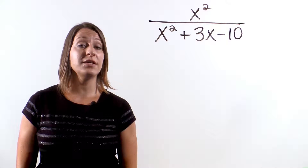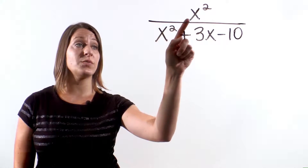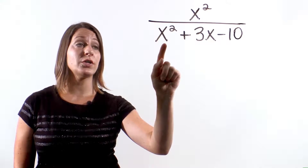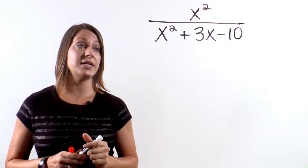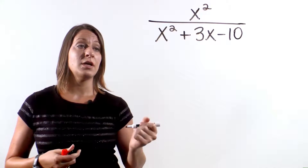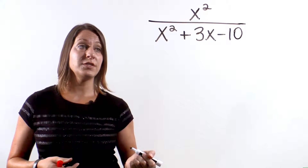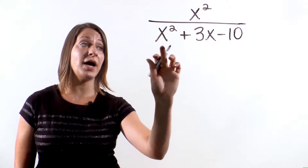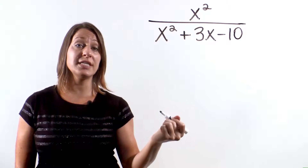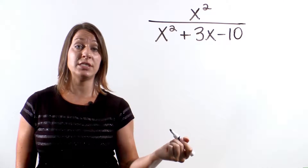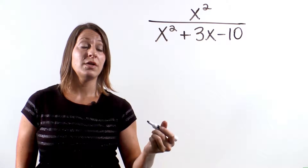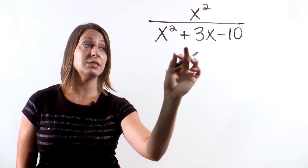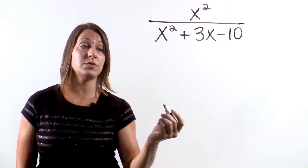Let's try another example. Take a look at this rational expression: x squared over x squared plus 3x minus 10. The first thing we are going to do is set that denominator equal to 0, because we want to find the value that would make the bottom equal 0.